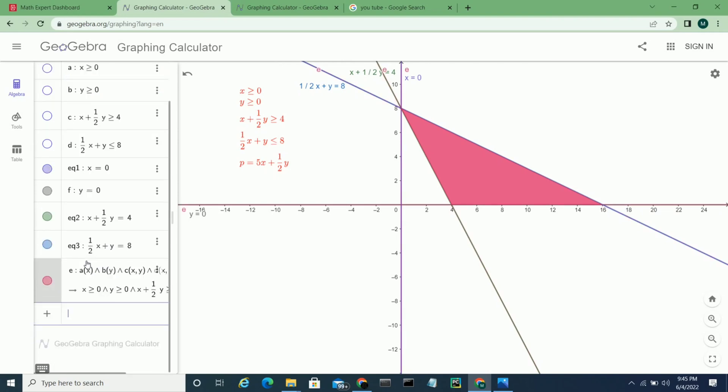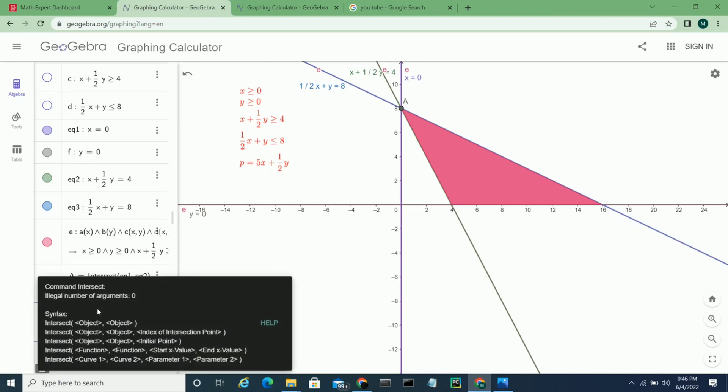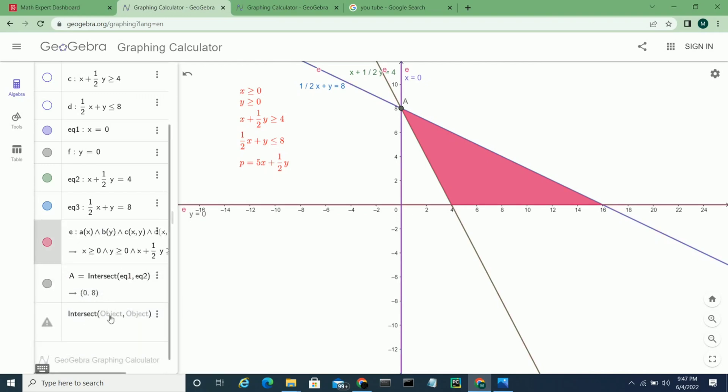Now we will find intersection points. So we write 'intersect'. This option is given. We have to type object, object means which equations we want to find the intersection point of. So if I want to find intersection of equation 1 and f, not equation 2, so here we get 0, 8 and it's also labeled as A.